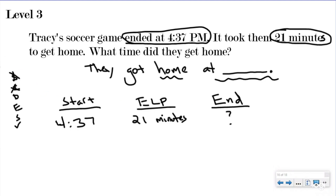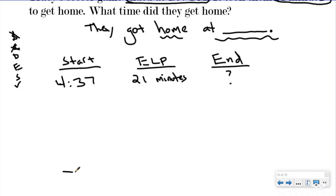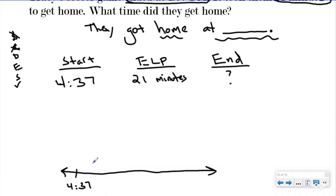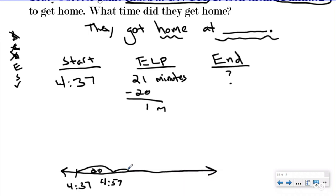Let me give myself a little more room - you might have to use another piece of paper. I'm going to draw my timeline and label it starting at 4:37. Now this is just a Level 1 question. I took it from a Level 3 word problem, and by developing my plan I've made it a simple elapsed time question. I'm going to use my hills and mountain strategy - 20 minutes first.